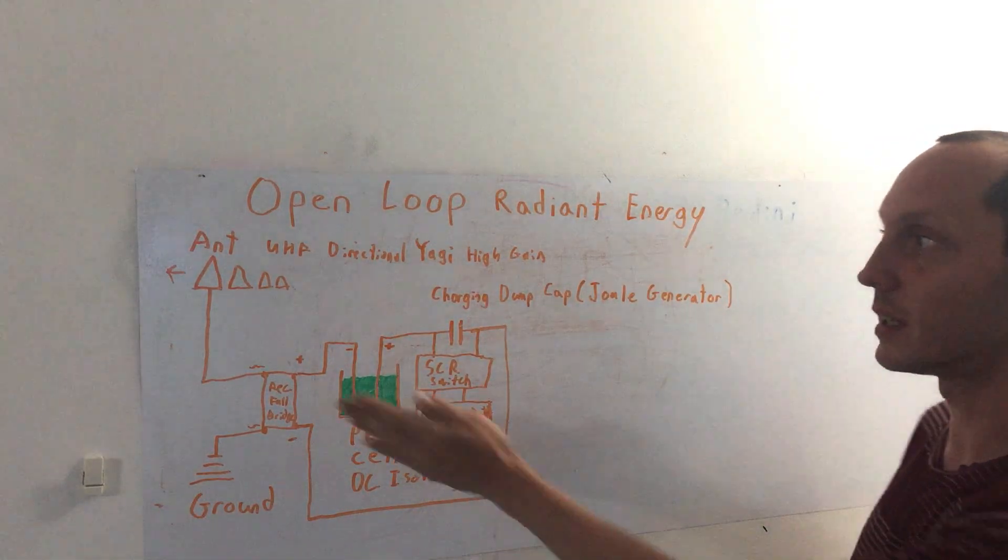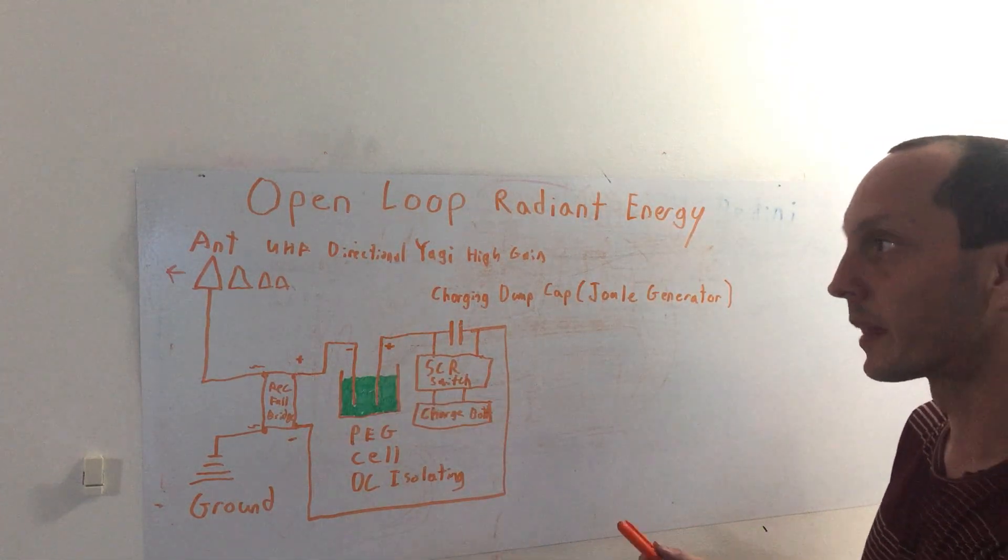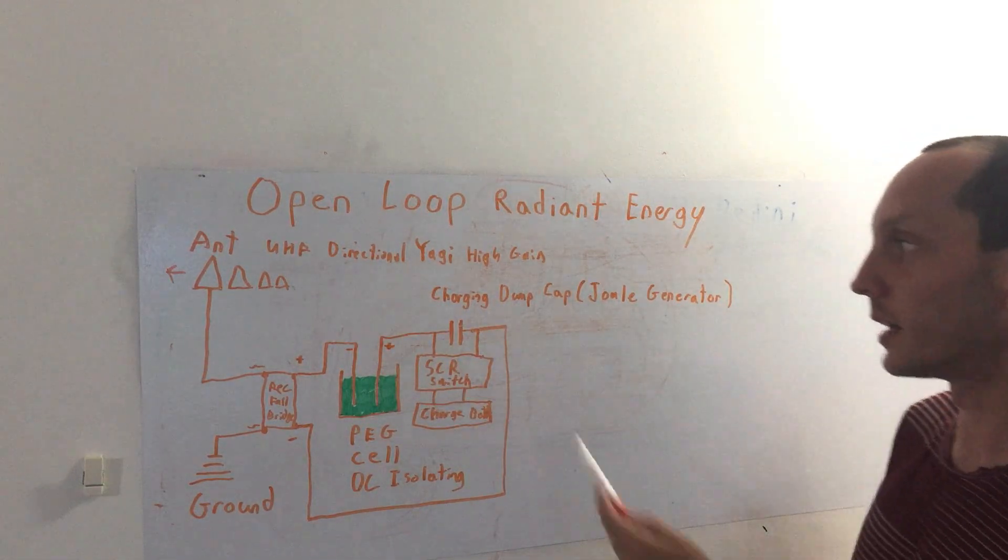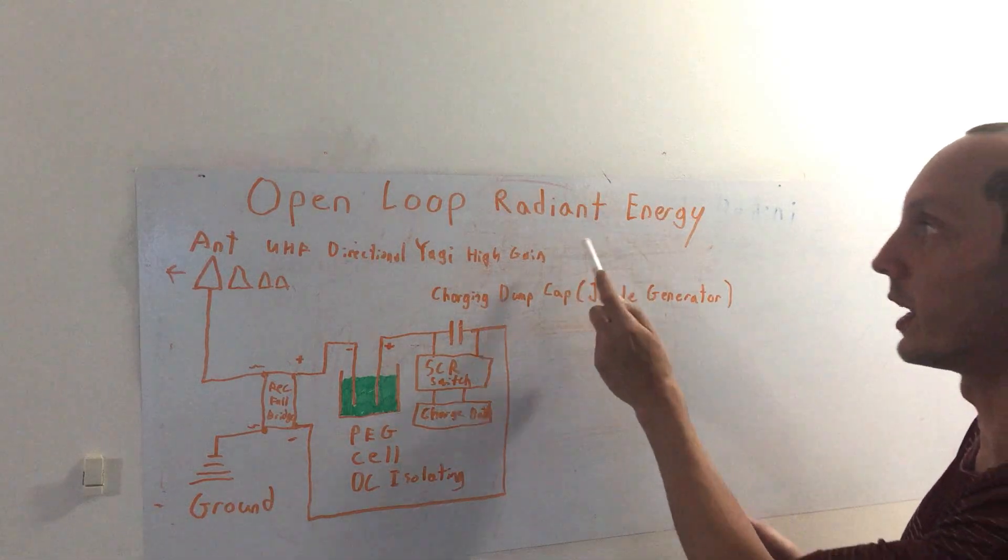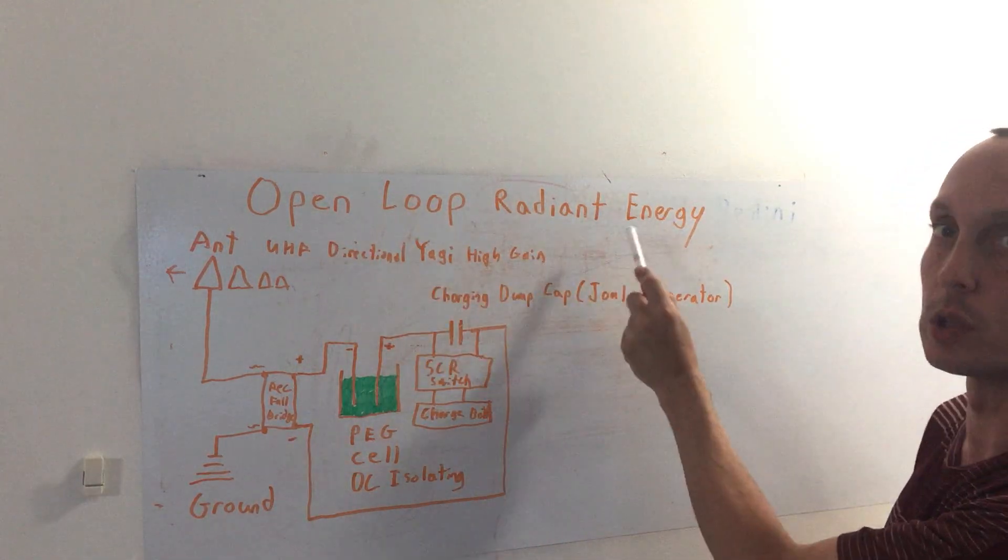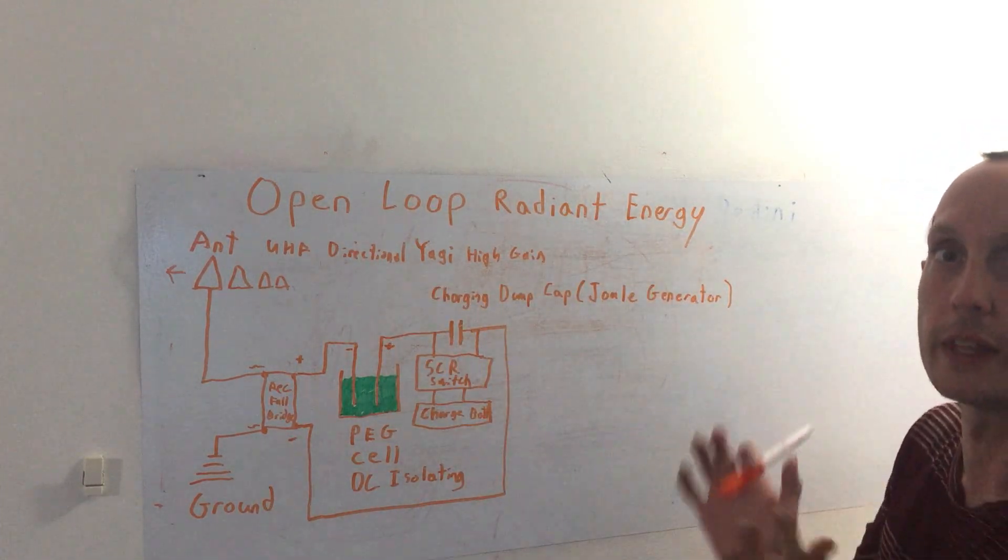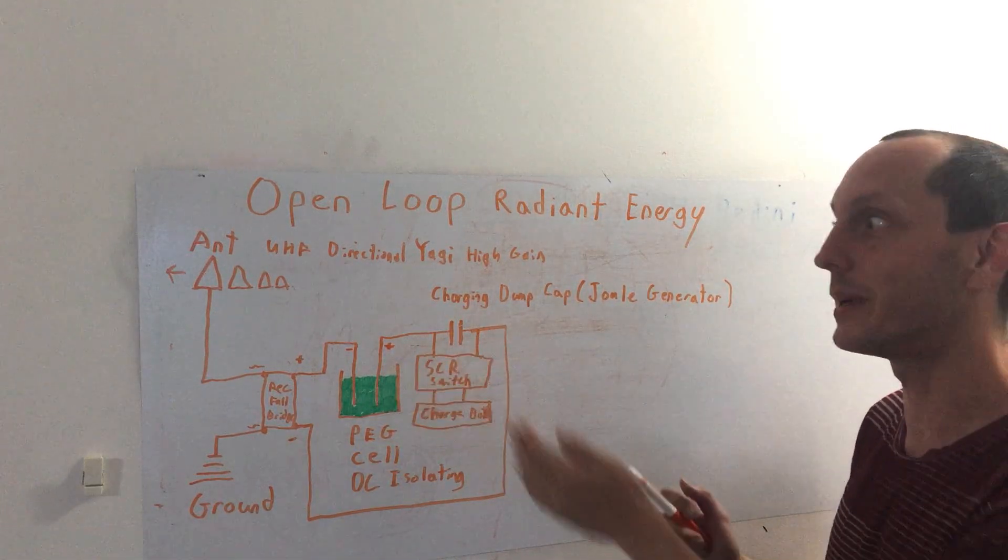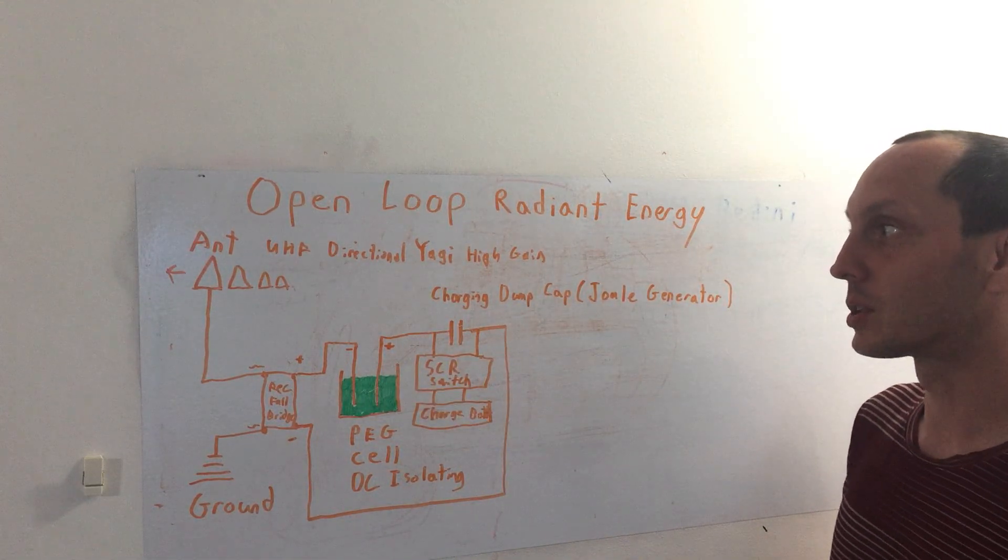This is a much more efficient way if you have the means and nearby RF. This is a way of taking advantage of the radiant energy as an open loop harvester rather than a closed loop. So for those who understand that, this is big, this means a lot.